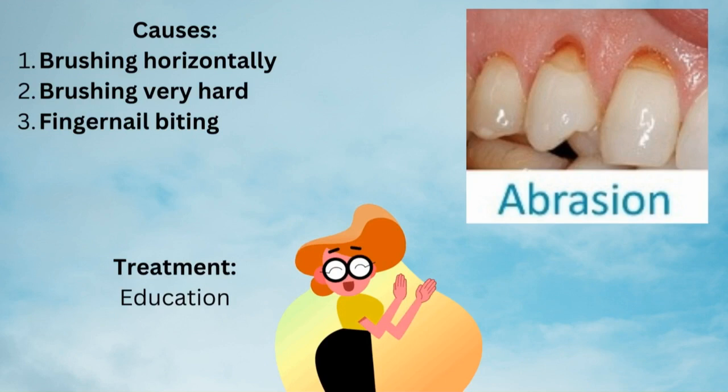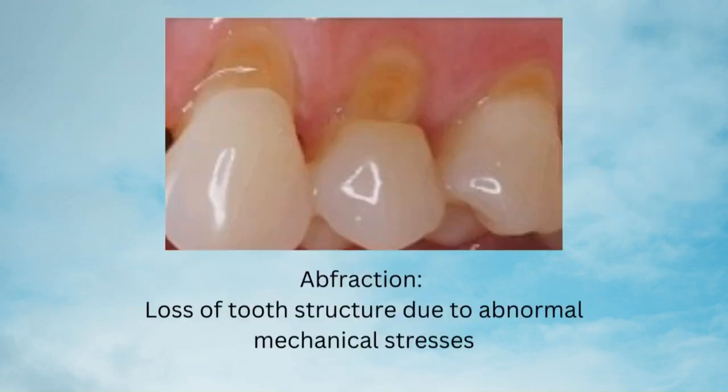You can see my previous videos about which toothbrush to purchase and which brushing technique to use. Next is abfraction, which is defined as loss of tooth structure due to abnormal mechanical stresses — not mechanical means like abrasion.